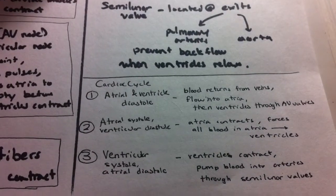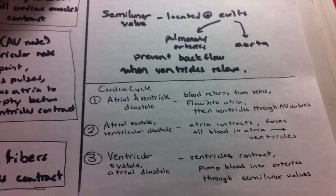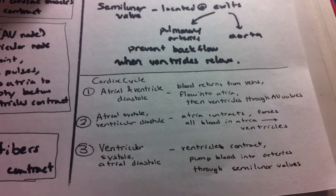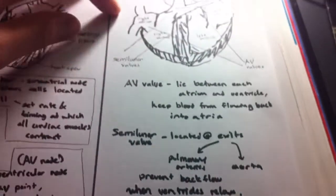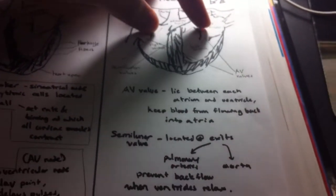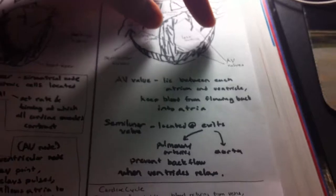The second part is atrial systole, so the atria contract, and ventricular diastole, so they relax. So again, the atria contract and send blood from the atria to the ventricles.